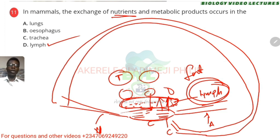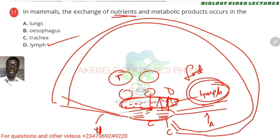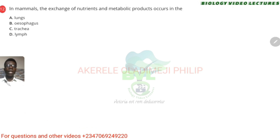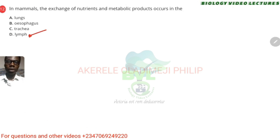If you are watching my video on transport system in animals, this will make it easier to understand. You can always rewind the video. In mammals, the exchange of nutrients and metabolic products occurs in the lymph — I already explained that just now.